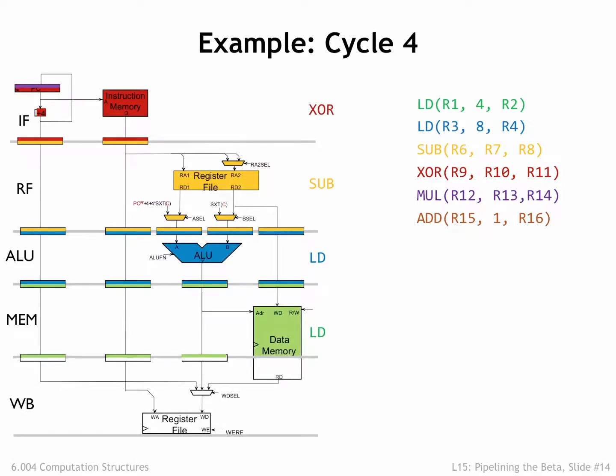In cycle 4, we're overlapping execution of 4 instructions. The MEM stage initiates a memory read for the green load instruction. Note that the read data will first become available in the WB stage. It's not available to the CPU in the current clock cycle.